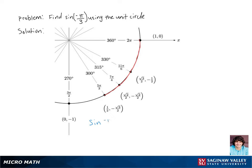Then we're going to take a look at the point we arrive at after traveling that distance of pi thirds clockwise on the unit circle. Our sine value of negative pi thirds is just the y-coordinate of the point we arrive at, so our final answer is negative root three over two.